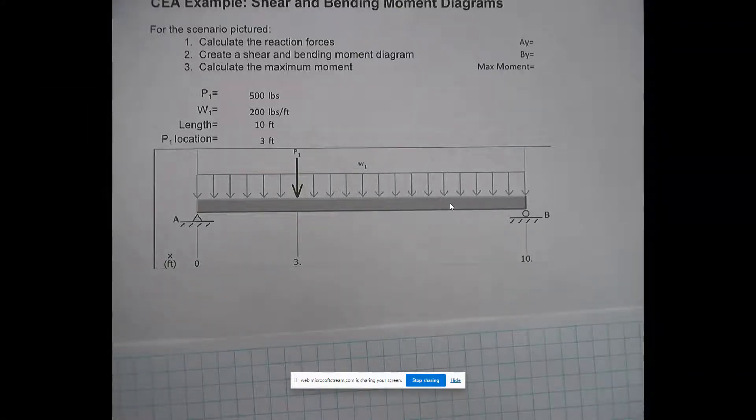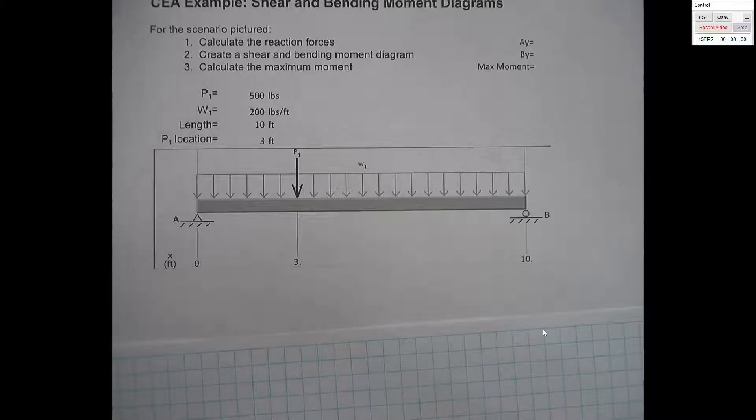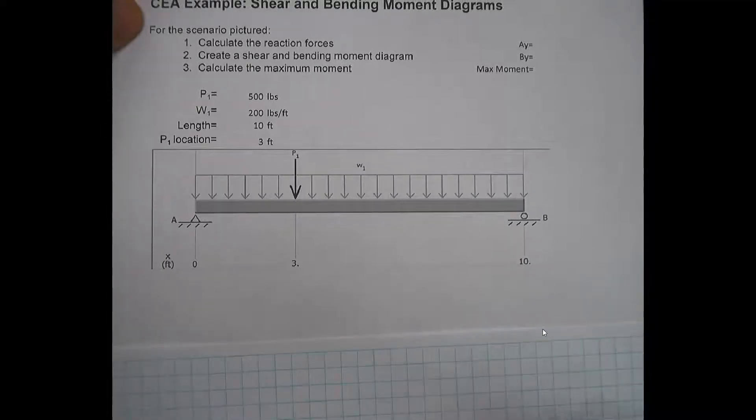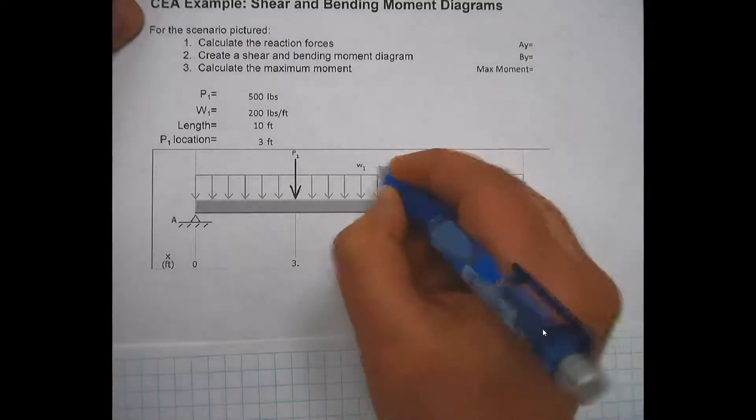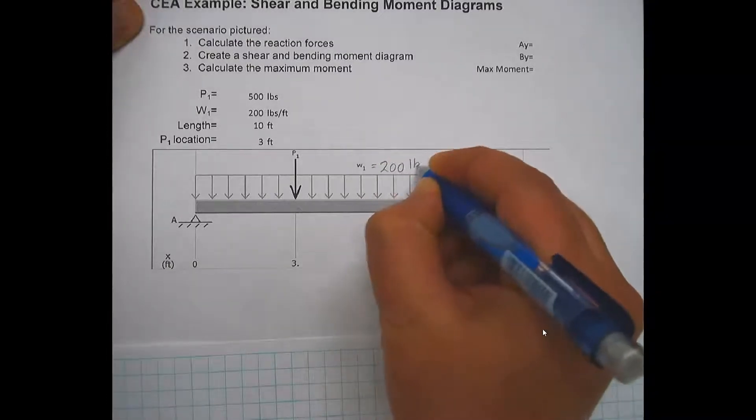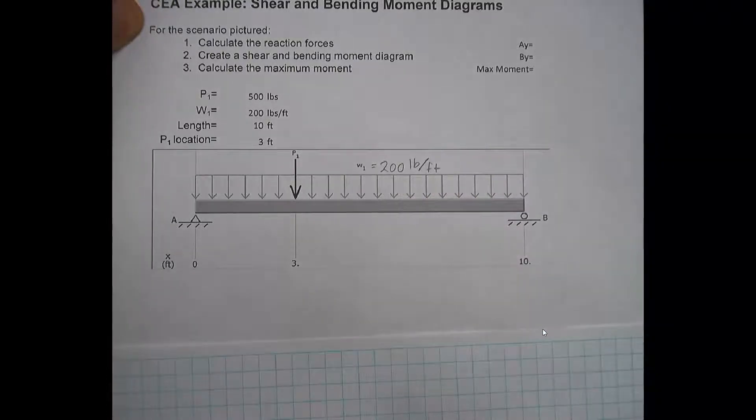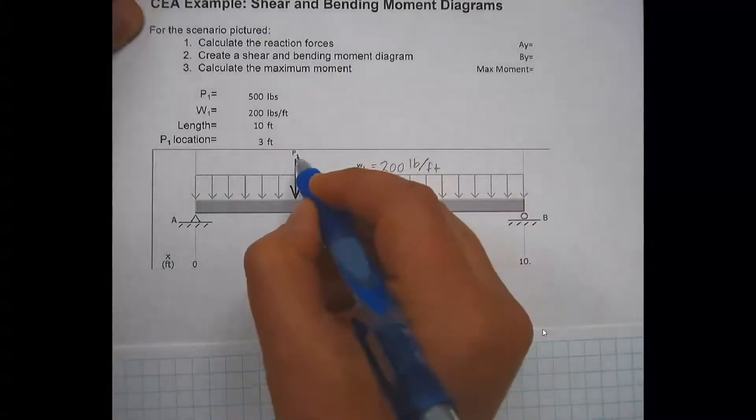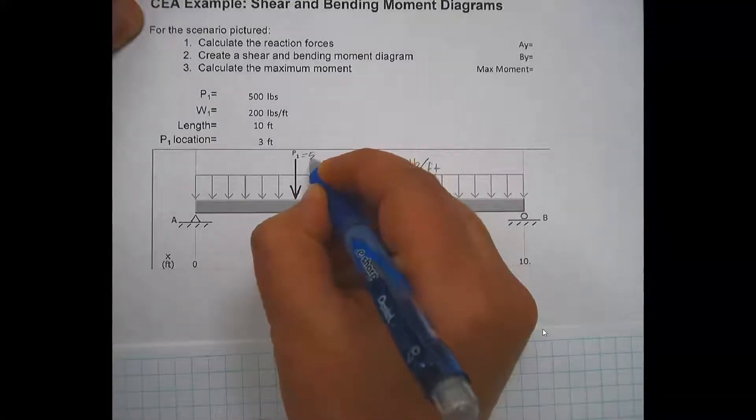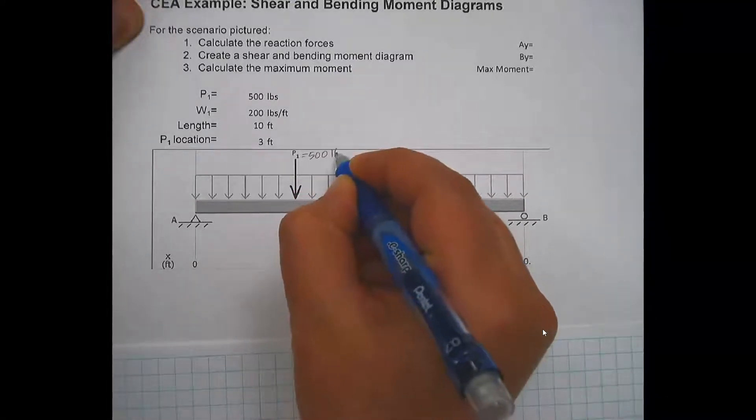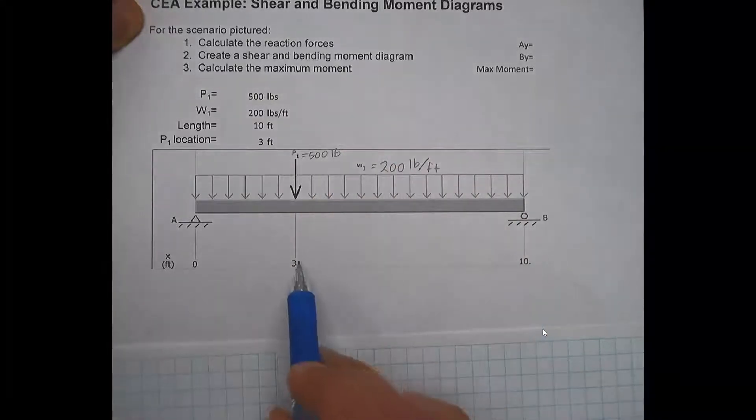Hello, in this video I'm going to go through the steps to create the shear and bending moment diagrams for the beam shown here. So if we look at this beam, it has a distributed load of 200 pounds per foot, and we're also told that we have this point load of p1 which is 500 pounds. The beam is 10 feet and the point load is applied three feet in.